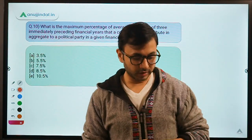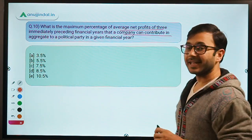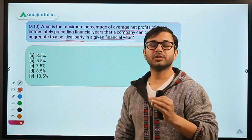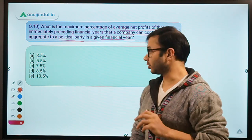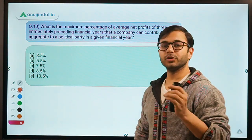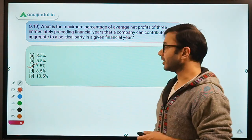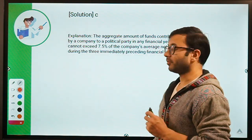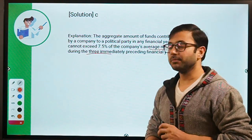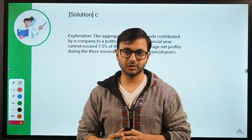The last question: what is the maximum percentage of average net profits of three immediately preceding financial years that a company can contribute in aggregate to a political party in a given financial year? The options are 3.5%, 5.5%, 7.5%, 8.5%, and 10.5%. The correct answer is C — 7.5%. Remember both facts: the percentage limit and the three-year averaging period for net profits.